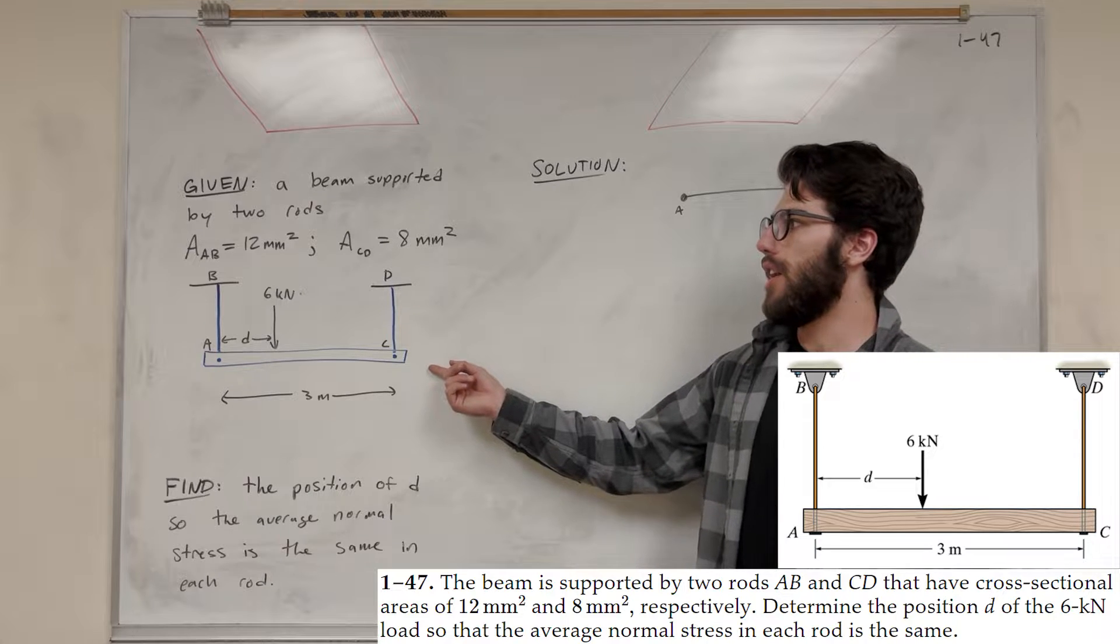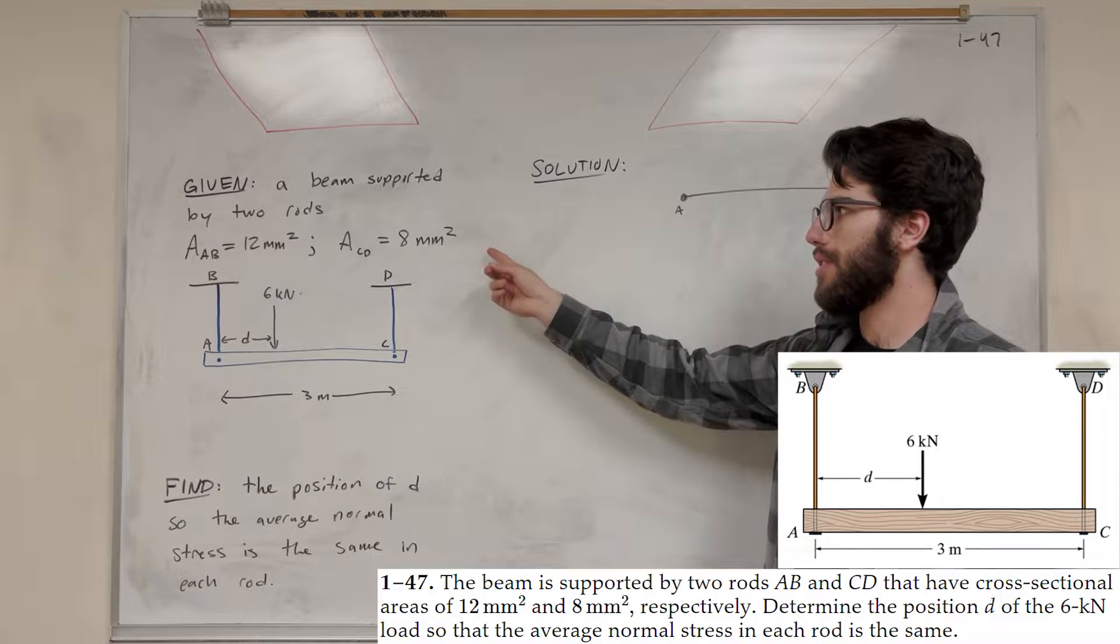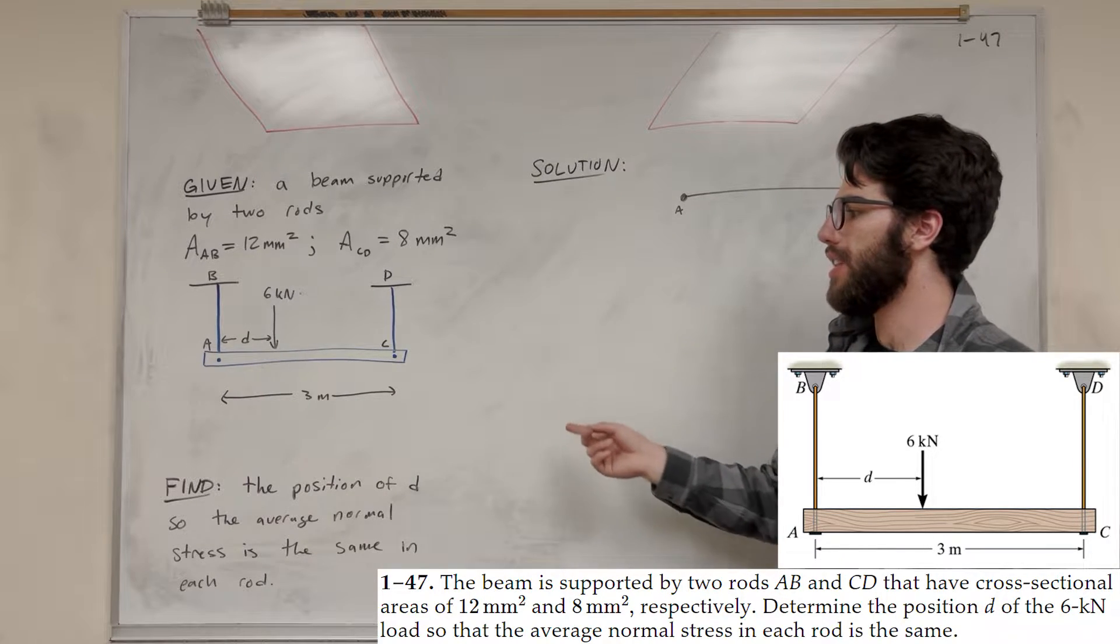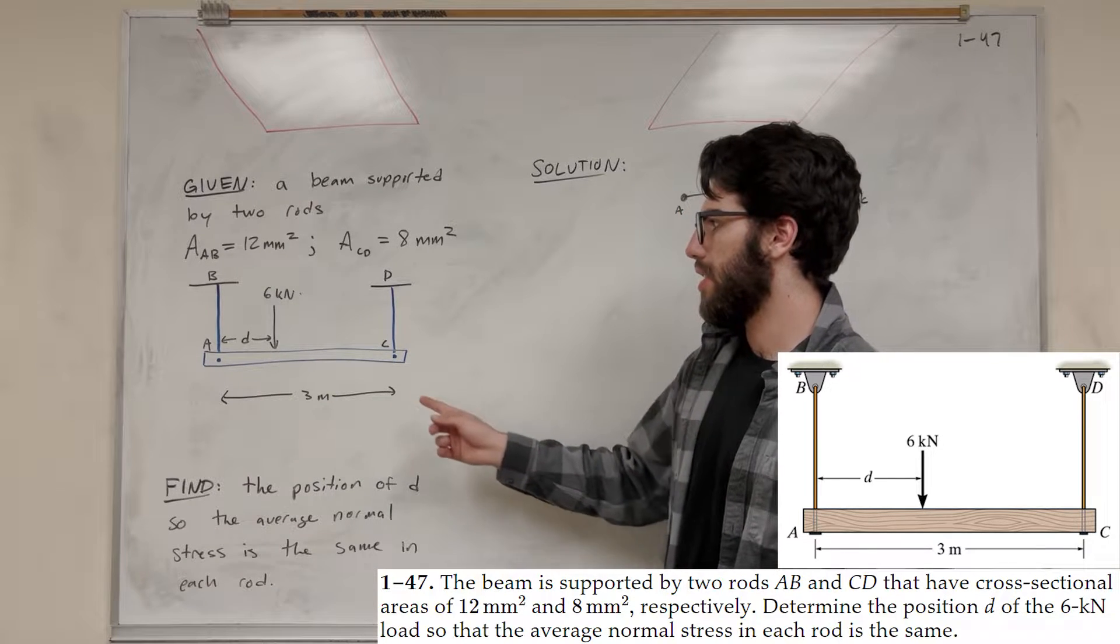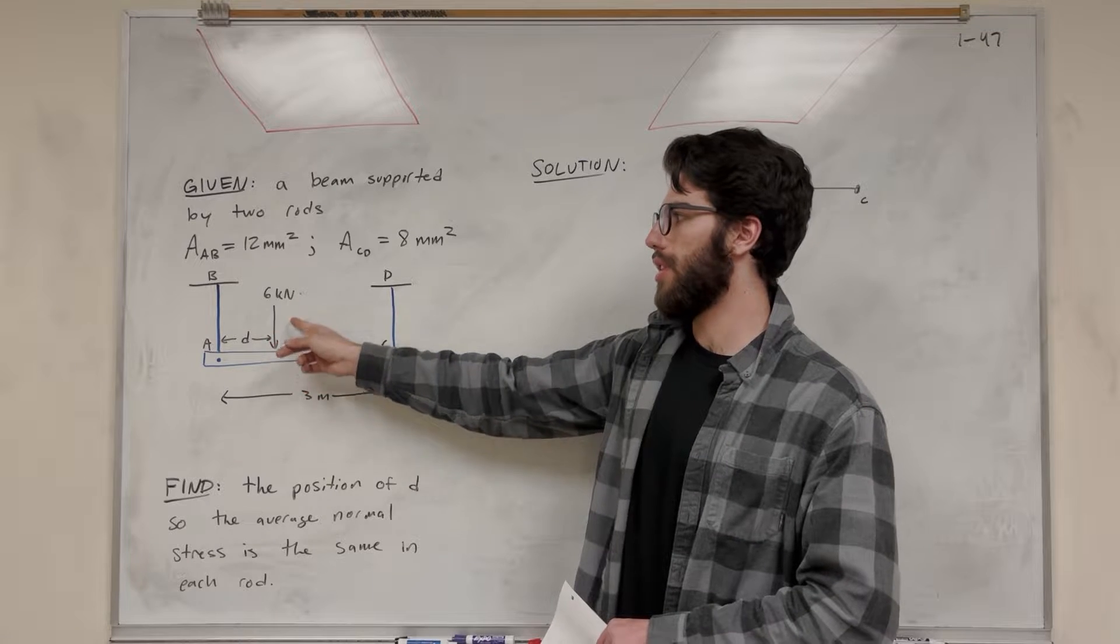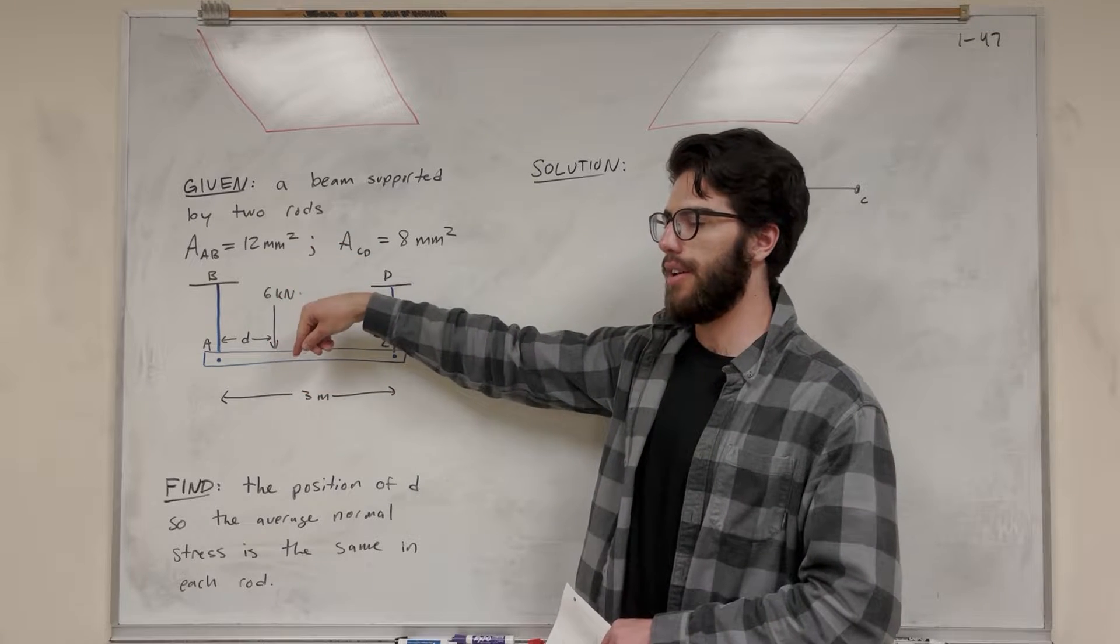So we're given a beam that's being supported by these two rods, and we're given the areas of them, two rods or whatever. And our goal is to find the position of D, which is the distance to the six kilonewton load. There's a six kilonewton load being pushed down on this.